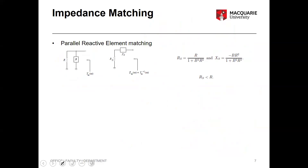Similarly, you can transform a parallel resistance and susceptance back to a series resistance and reactance. The series resistance RS = R/(1 + B²R²) and the series reactance follows from B and R. Importantly, the series resistance after this transformation is smaller than the original parallel resistance.